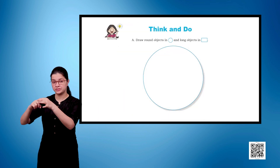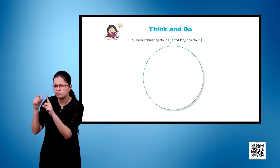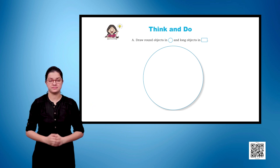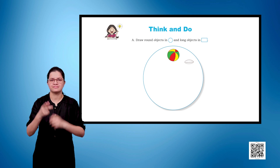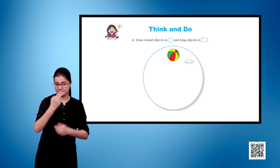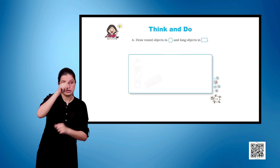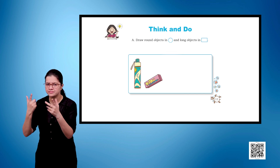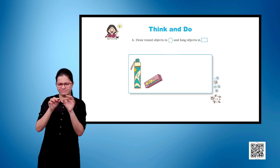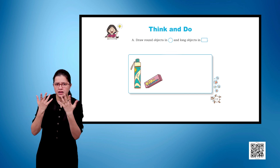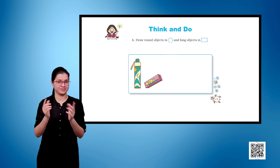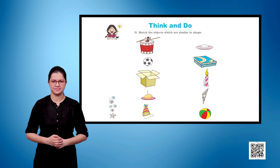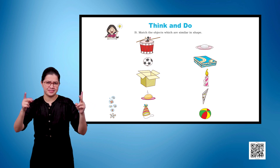Think and do. A. Draw round objects in a circle and long objects in a rectangle. B. Match the objects which are similar.